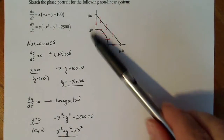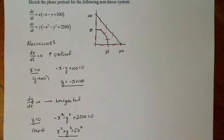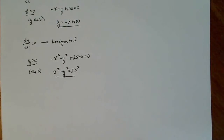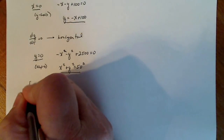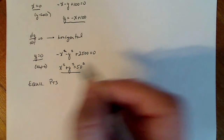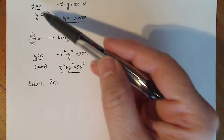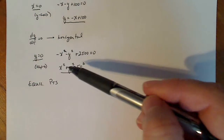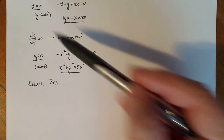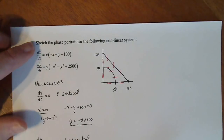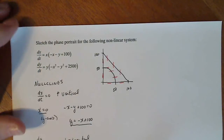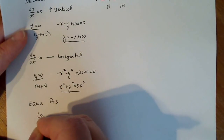Now let's find the equilibrium points. If you write out your nullclines, this pair makes dx/dt equals zero and this pair makes dy/dt equals zero, so you can do combinations to get all equilibrium points. If x equals zero and y equals zero, that makes both of them zero at the same time, so one equilibrium point is the origin.